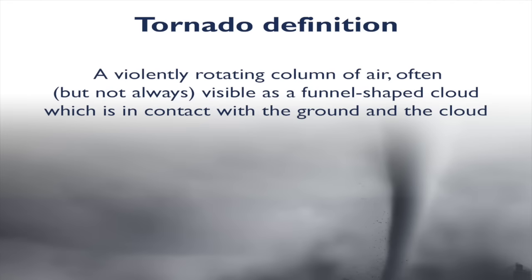Tornado definition: it's a violently rotating column of air, often but not always visible as a funnel-shaped cloud. It's usually in contact with the ground and the cloud base, and we can see those in both cases. If it's not touching the ground itself, it's called a funnel cloud, but once you have that contact between the cloud base and the ground, that's when the definition of tornado is actually most appropriate.